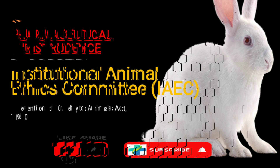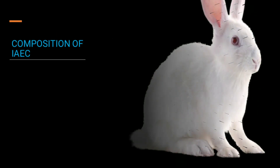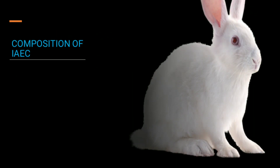Let's begin. So initially, let's start with what is IAEC. It is a local body which has been approved by the committee for the purpose of controlling and supervision of experiments that have been performed on animals, and it has the power to permit experiments on small animals. So this is basically the IAEC committee.